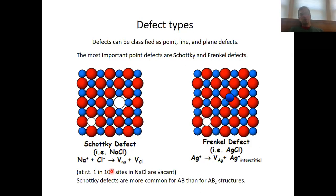Schottky defects are more common for AB structures than for AB2 structures simply because of statistical reasons. If we have an AB2 structure, then we actually have to remove three ions — two anions and one cation — which is more than in the case of an AB structure where we remove one cation and one anion.